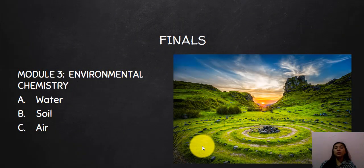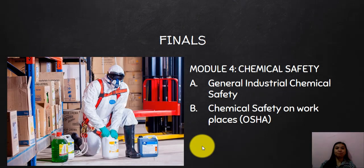Now for the final term topics: Module three covers environmental chemistry — specifically the chemistry of water, soil, and air. Module four is all about chemical safety, covering general industrial chemical safety and chemical safety in the workplace.